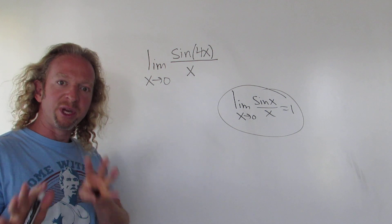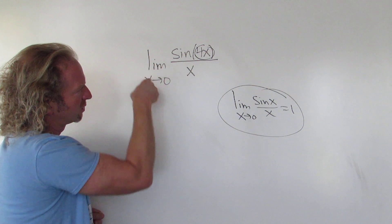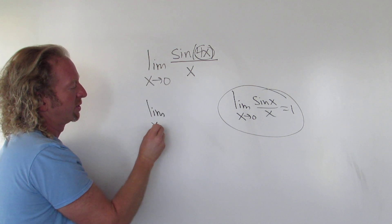So the idea here is to make the numbers match. So here we have a 4x so we should have a 4x here as well. So we're going to rewrite this as limit x approaches 0.